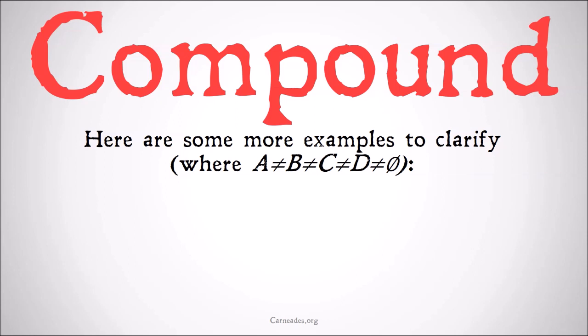Here are some more examples to clarify, where A doesn't equal B doesn't equal C doesn't equal D doesn't equal the null set. We have the union of the class of A and the class of B, minus the class of A. First we do what's in the parentheses, so that's just the class of A and B minus the class of A, which just equals the class of B because we take the A out of that initial class.